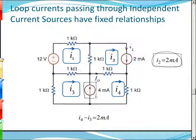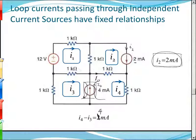If the current source is in the middle, it tells us the combination of currents. I4 is going up and I3 is going down, so the total current in the upward sense is I4 minus I3. That must equal this quantity here, which is 4 milliamps — not 2. Sorry about that, copy and paste error.